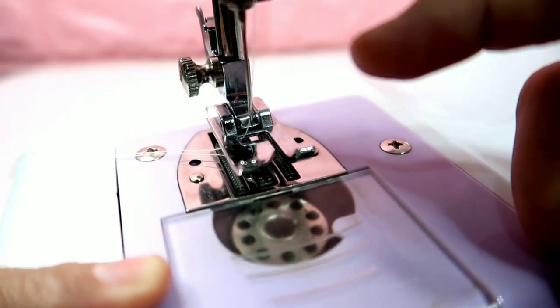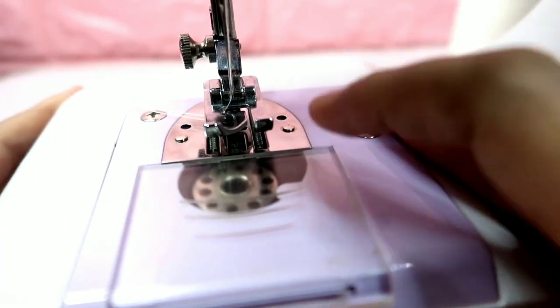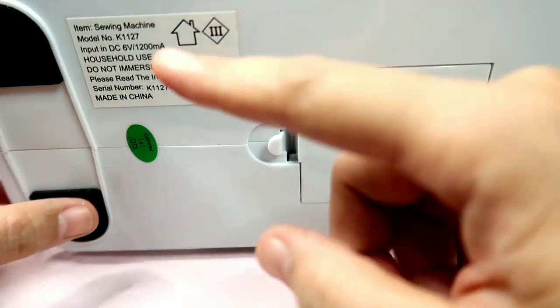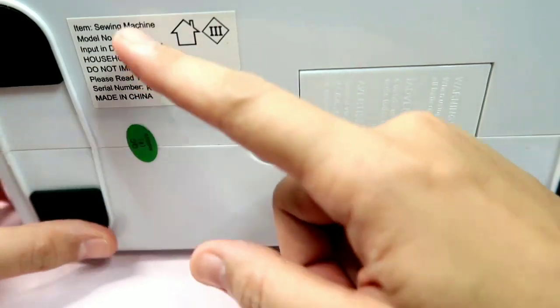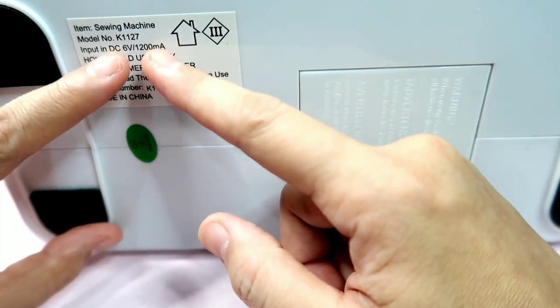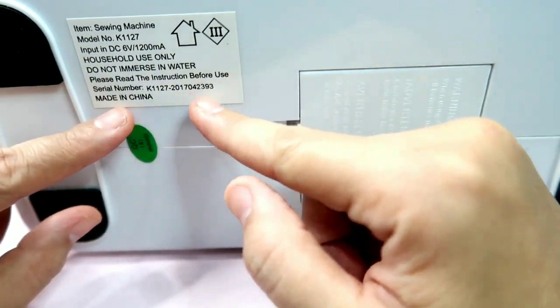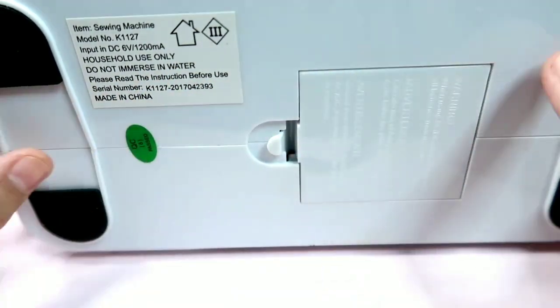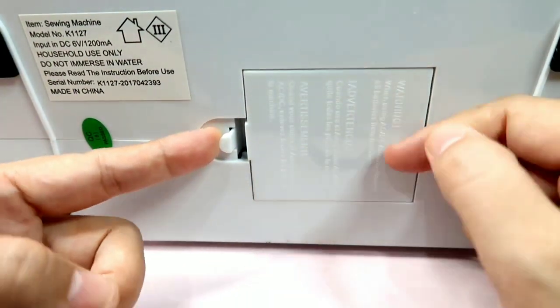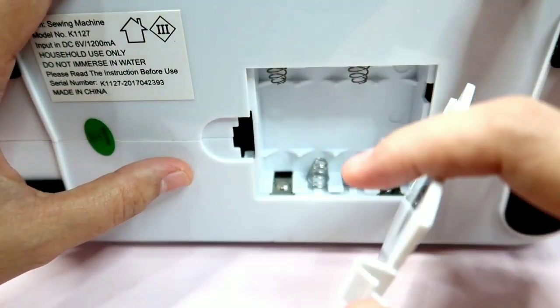This is why it catches the lower thread, because this bobbin is metal. If you replace it with plastic, it might not work. So it really needs to be metal. Next part is the battery. Can it work without power supply?